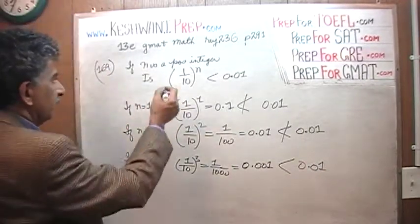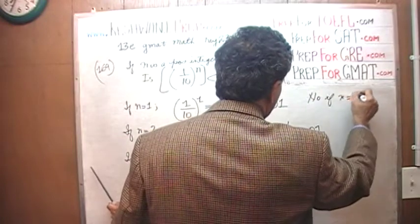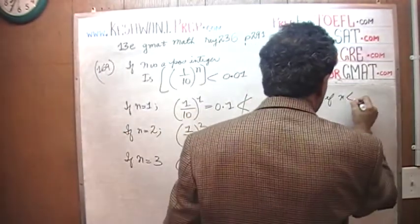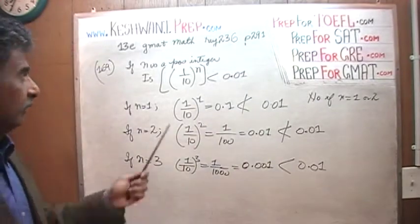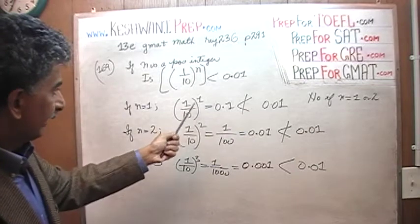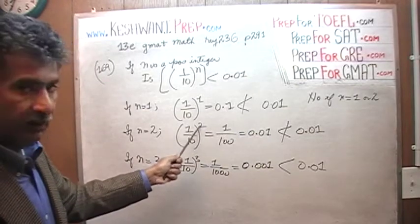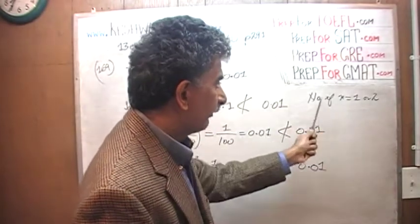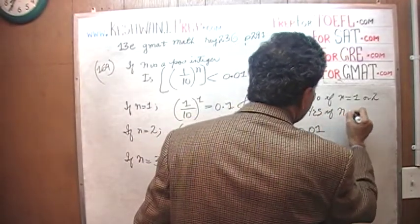So the question was: is this quantity less than 0.01? The answer is no if n equals 1, and no if n equals 2. But if n happens to be 3, the answer would be yes. Yes, if n is greater than or equal to 3.